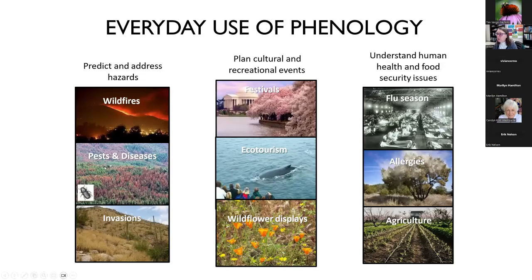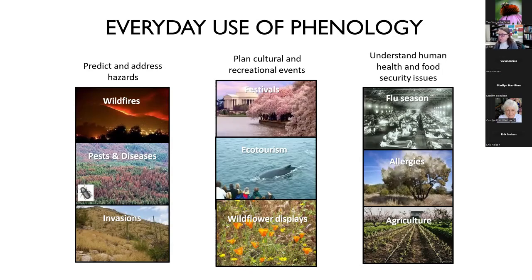Some practical uses of phenology: it helps predict and address hazards such as wildfires, pests, and diseases. The timing of volatile organic compounds in vegetation can tell firefighters when and where wildfires might occur. We also know some ecosystems are vulnerable to pests and diseases, so knowing this helps plan and use pesticides to reduce impact. Invasive species have different phenology than native species, which helps manage invasions.